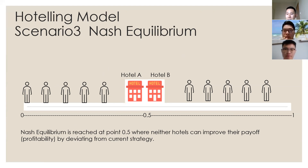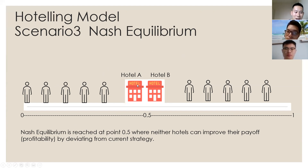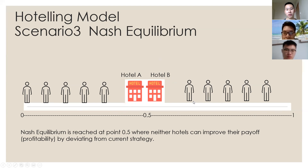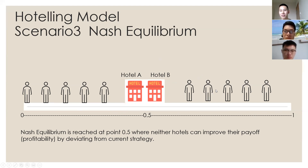A question arises: what if hotel A moves to the right of hotel B again? If we move hotel A to the right side of hotel B, hotel B still gets all the customers from the left side — already 50% of customers — and hotel A only has a limited amount of customers on the right side. Also, hotel A and hotel B will share the in-between regional customers. Hence, hotel B has strictly more profitable payoffs than hotel A. This means it is not a Nash equilibrium if hotel A moves to the right side of hotel B.